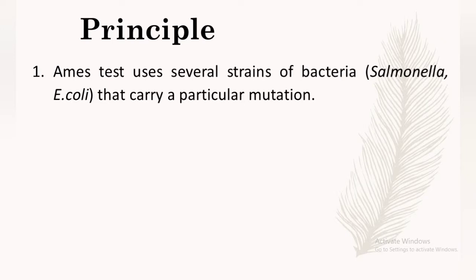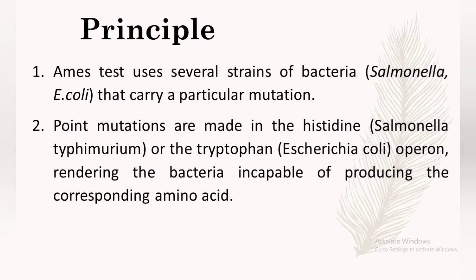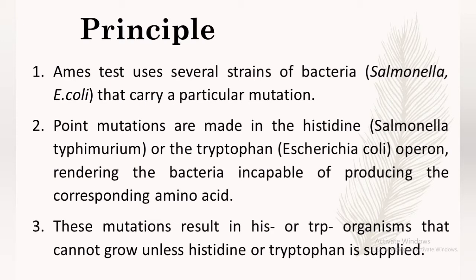The principle of the Ames Test is that it uses several strains of bacteria — Salmonella typhimurium and Escherichia coli — that carry a particular mutation. Point mutations are made in the histidine gene in Salmonella typhimurium or the tryptophan gene in Escherichia coli. Histidine and tryptophan are amino acids required for the growth of bacteria. This mutation results in histidine-negative or tryptophan-negative organisms that cannot grow unless histidine or tryptophan is supplied.